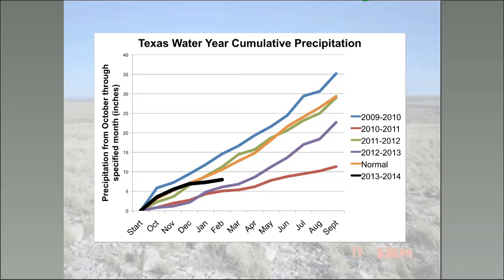Going back in history, the closest analog you can find to how this year is set up was 1996, which was really the first drought in this drought sequence.